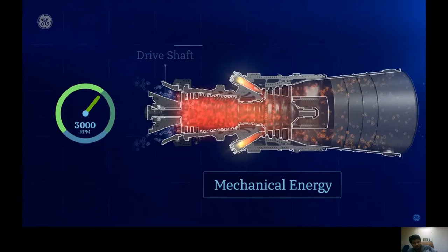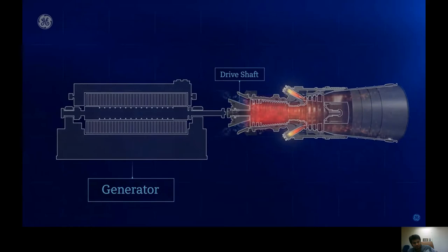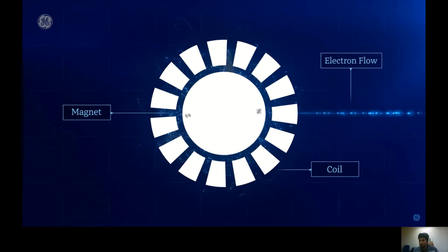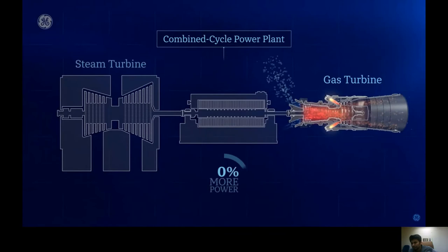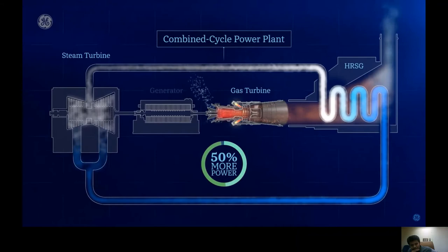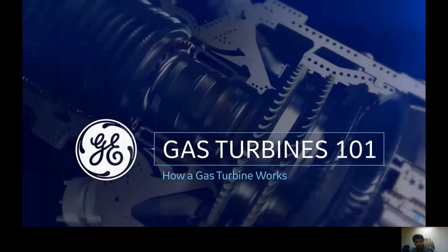The hot gas created from the ignited mixture moves through the turbine blades, forcing them to spin at more than 3,000 RPMs — chemical energy has now been converted into mechanical energy. The turbine captures energy from the expanding gas, causing the drive shaft connected to the generator to rotate. That rotating magnet creates a powerful magnetic field, causing electrons to move and generating electricity. In a combined cycle power plant, the hot exhaust is used to create steam that spins a steam turbine for 50% more power — that's GE Gas Turbine 101.